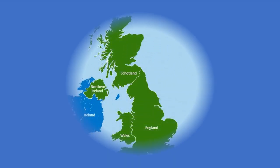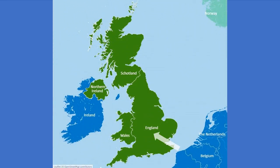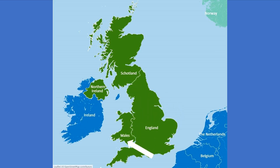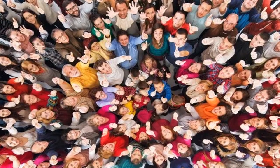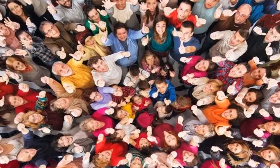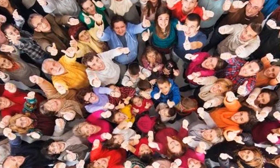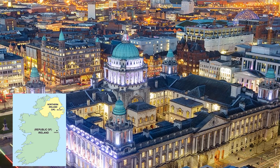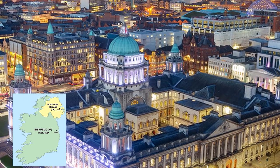England, Scotland and Wales are located on the island of Great Britain. Northern Ireland is a region on the neighbouring island of Ireland. Its population is about 2 million, and the capital and largest city is Belfast.